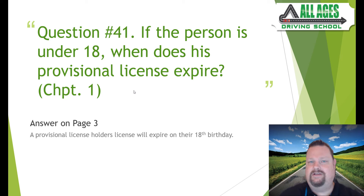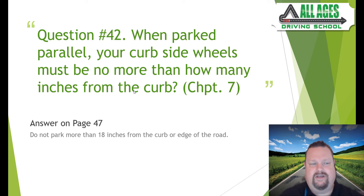Question number forty-one: if a person is under 18, when does their provisional license expire? The provisional license is given to those from 16 to 18. When you turn 18 years of age, the provisional license expires and you get a standard driver's license. Found on page 3.